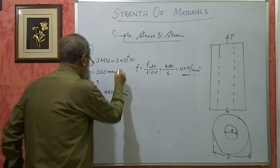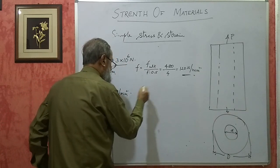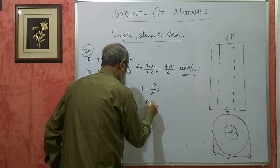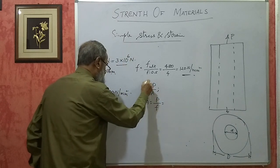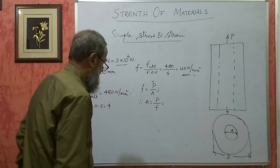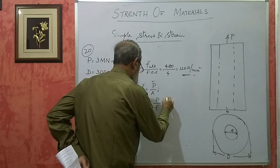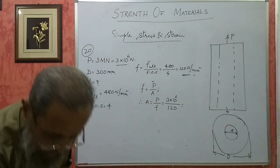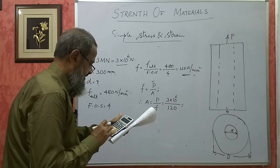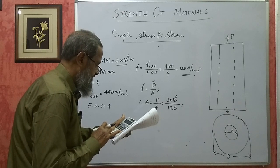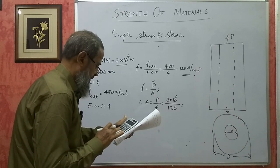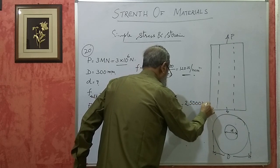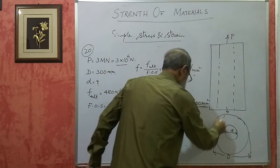It has to take this much load. We know F is equal to P by A. Therefore, A will be equal to P by F. P is 3 into 10 to the power of 6, divided by F which is 120. 3,000,000 divided by 120 will give you 25,000 mm square. This is the area that we have to have.